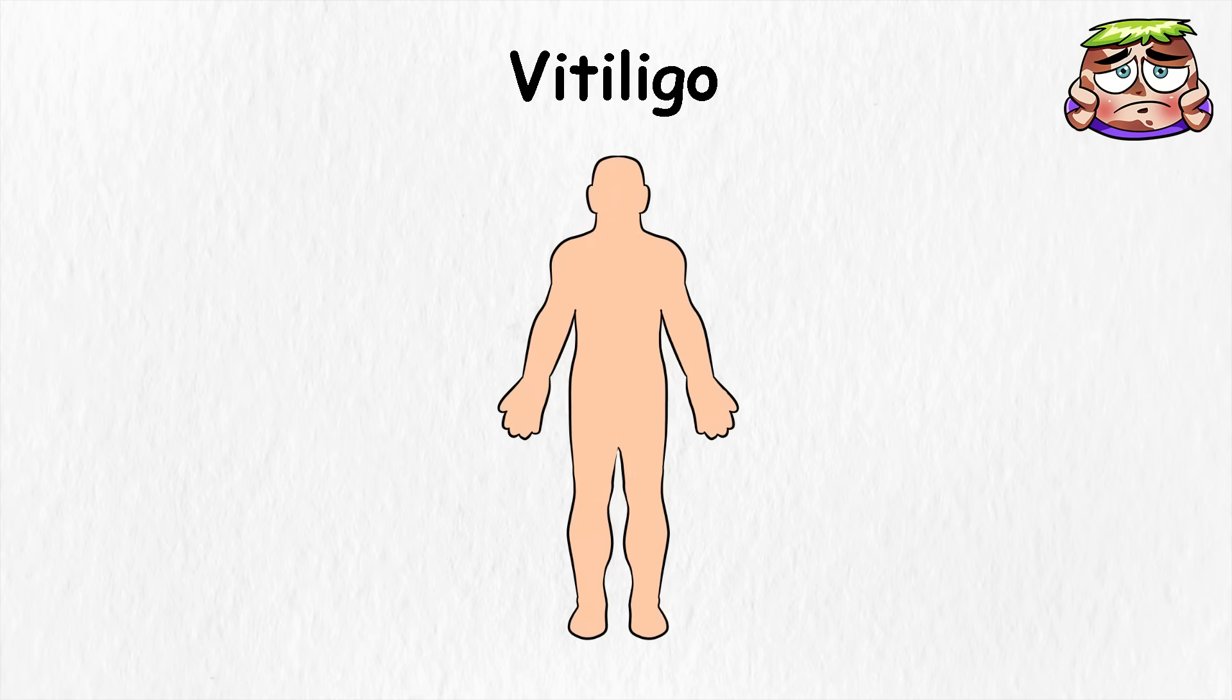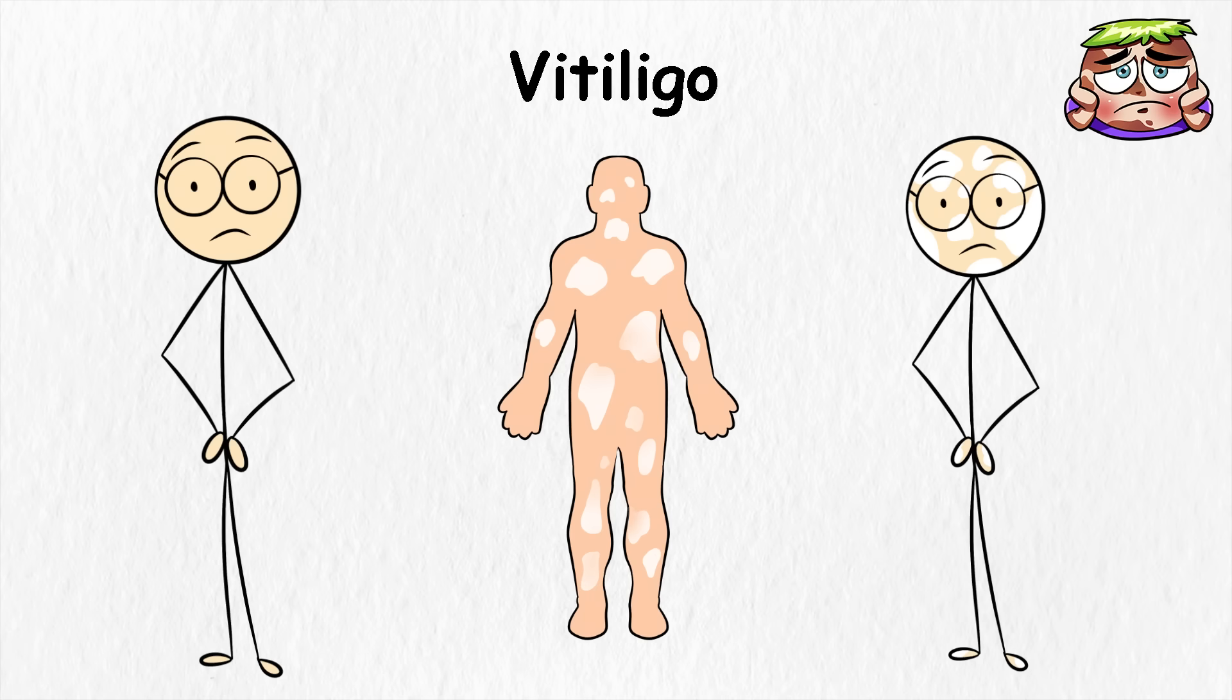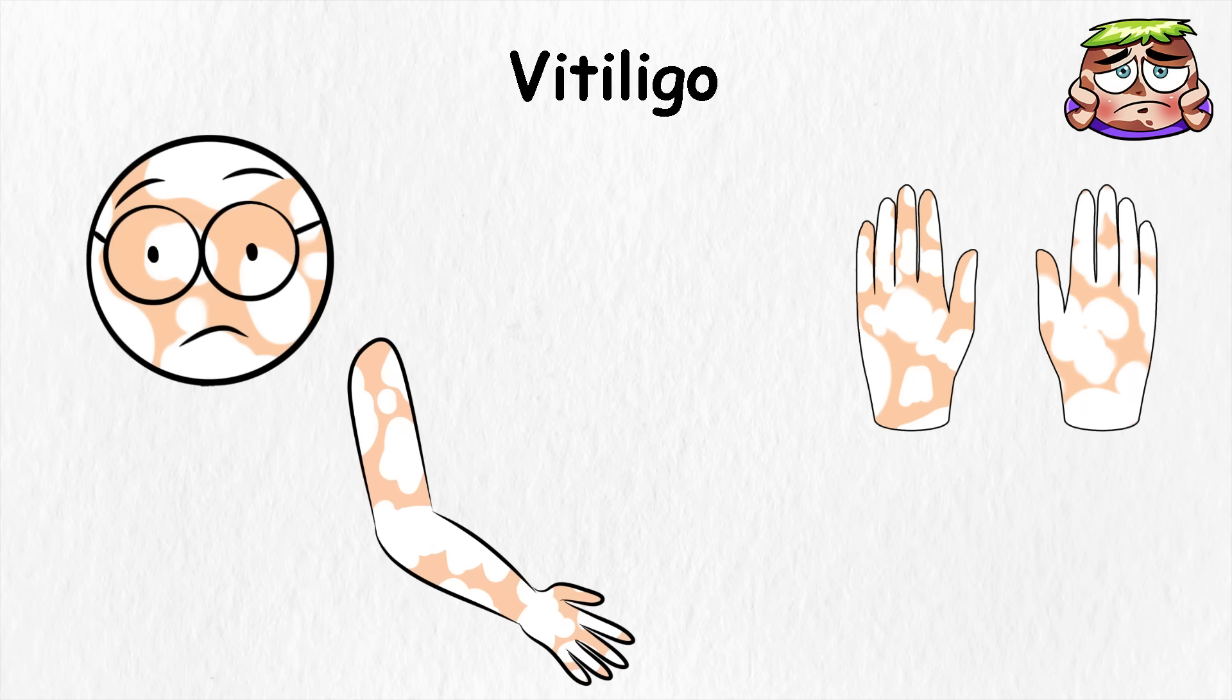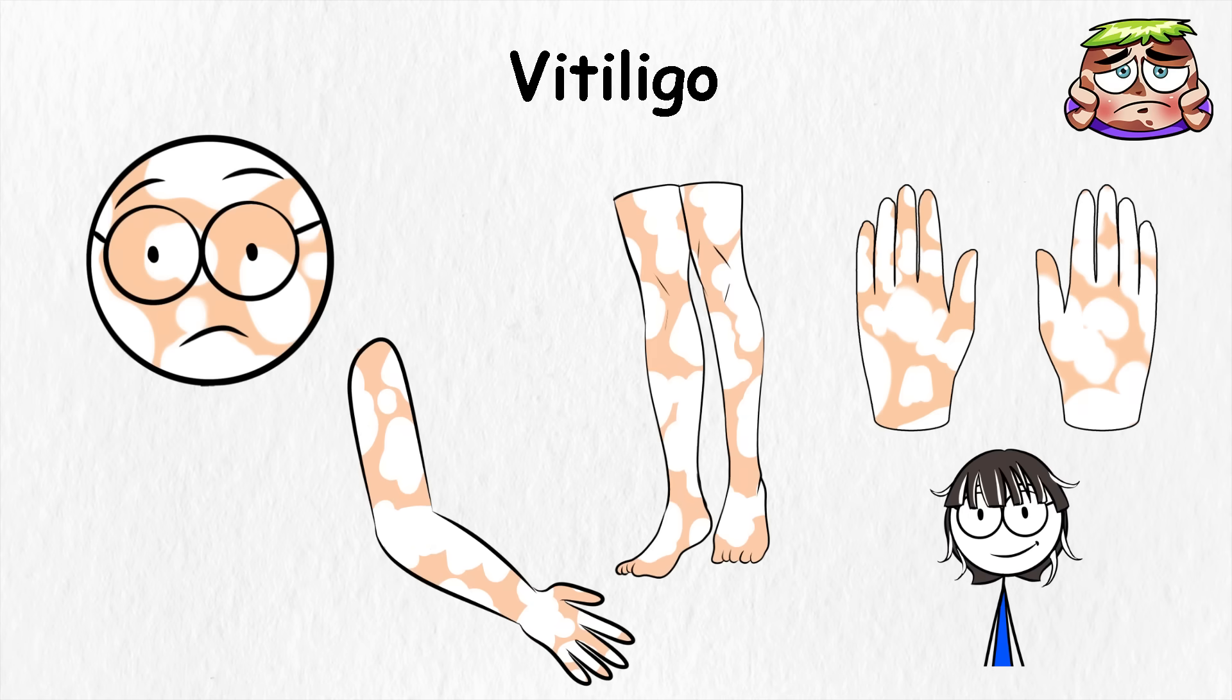Vitiligo. Vitiligo is when parts of the skin lose their color. Instead of being even all over, lighter patches start to show up where the cells that make melanin stop working. These spots can pop up almost anywhere, like on the face, arms, hands, legs, and sometimes even in hair, leaving white or silver streaks.